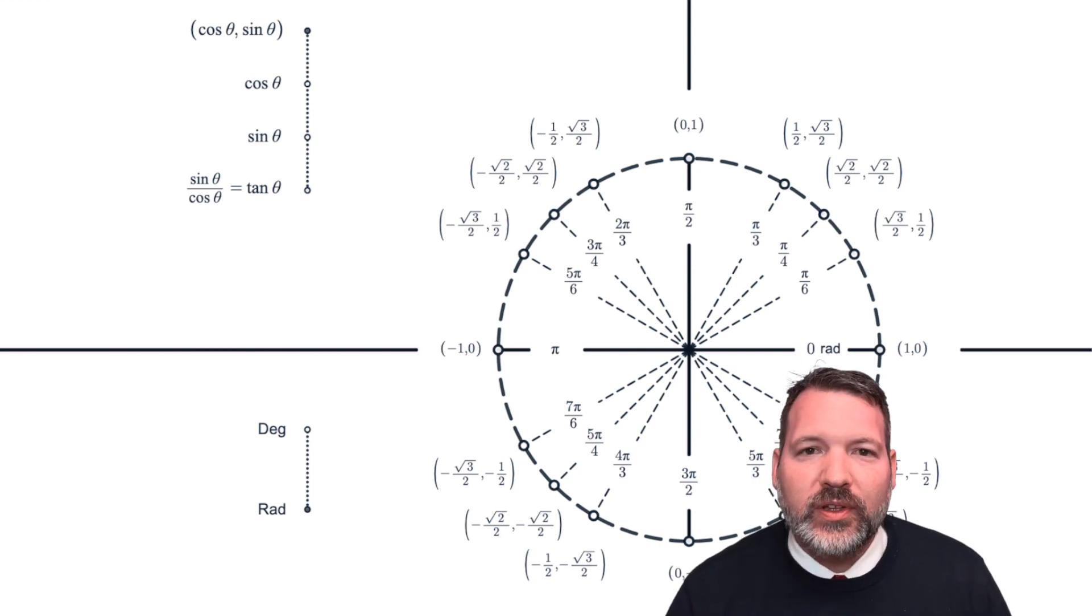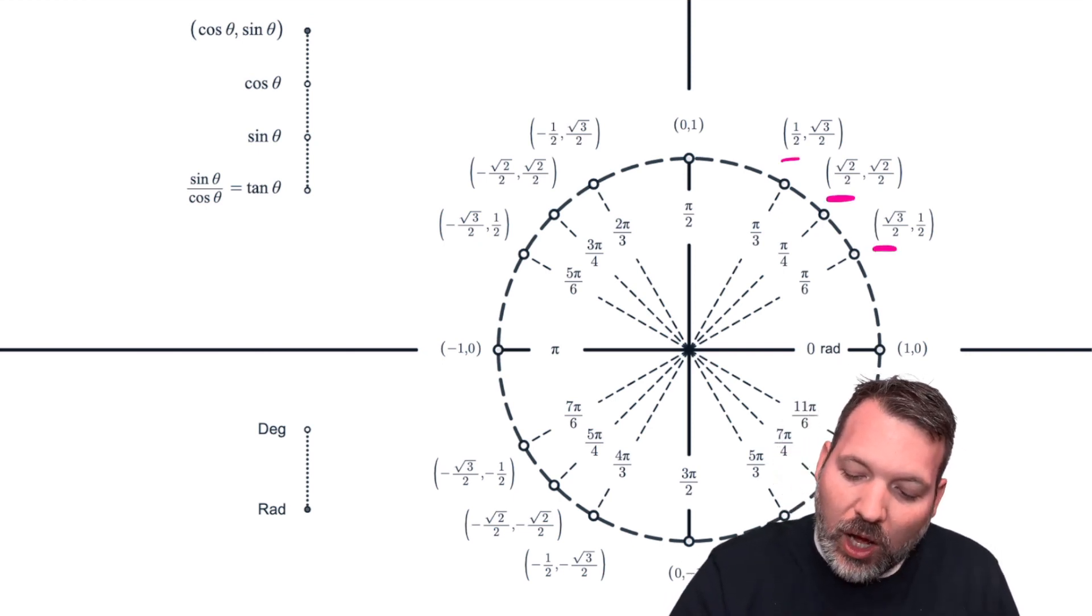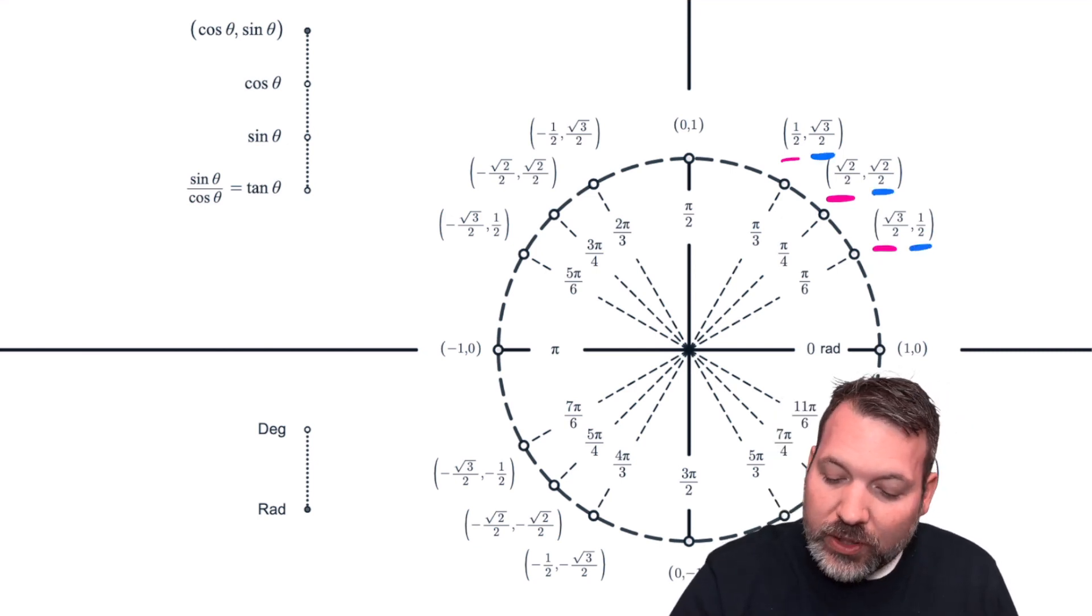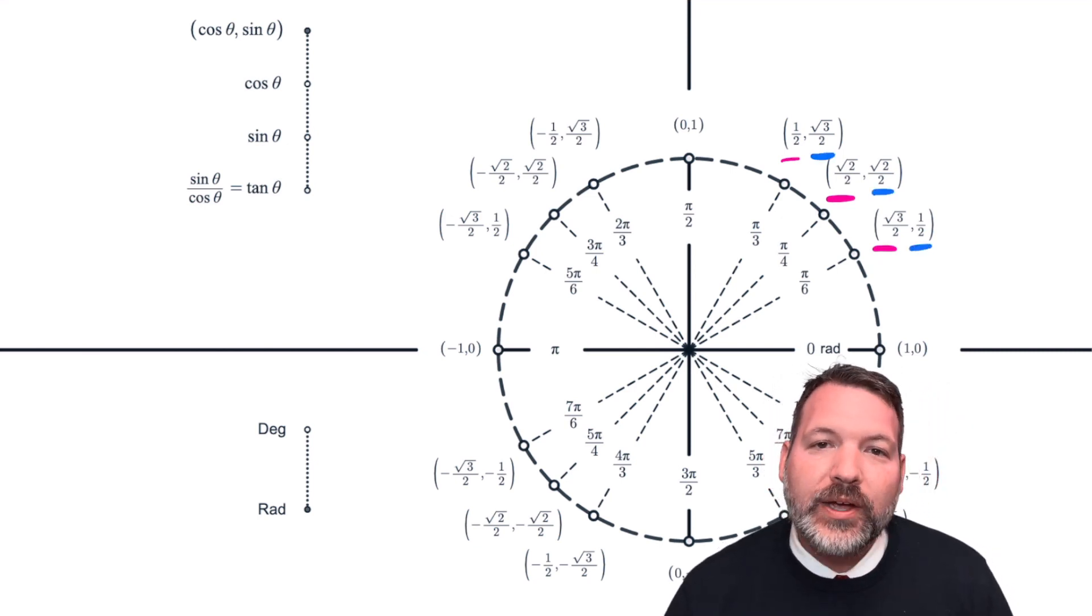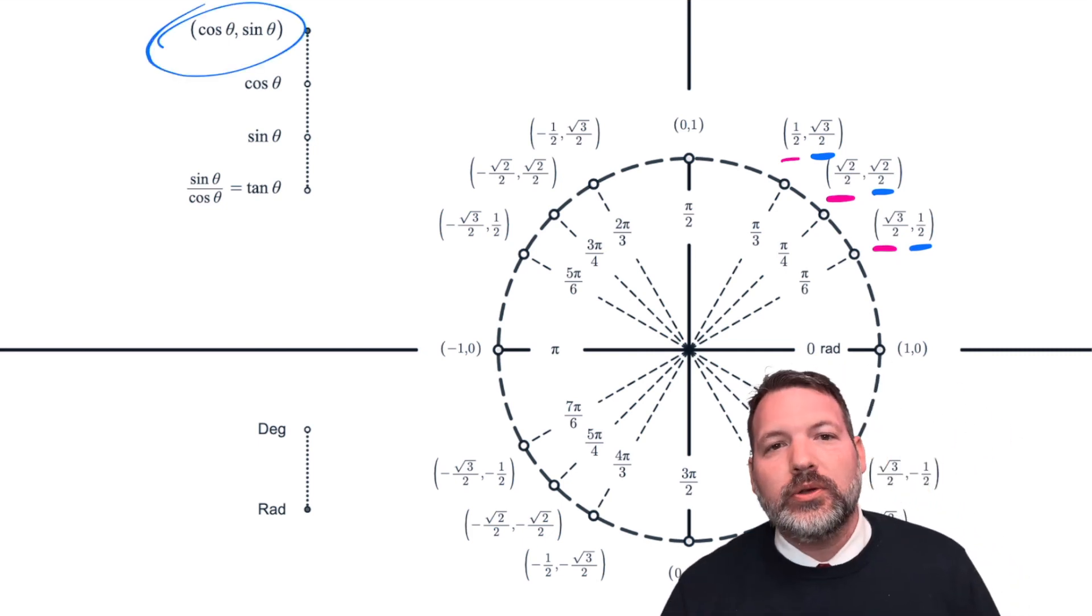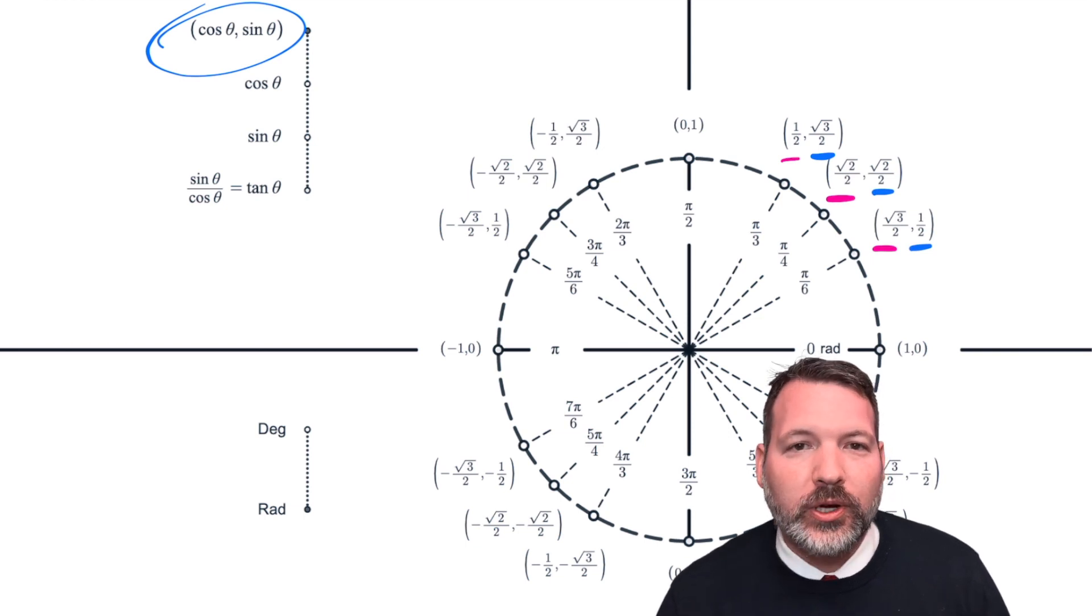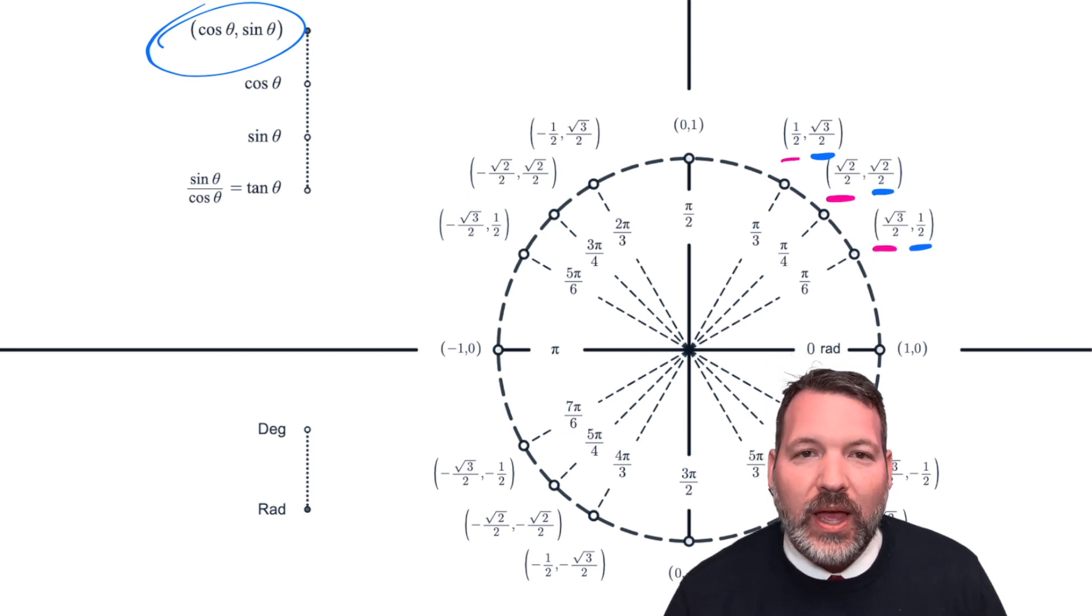The value of the cosine of an angle is just another way to talk about the x-coordinate along the edge of this unit circle. The value of the sine of an angle is really just a different way to talk about the y-coordinate along the edge of this circle. This is why sometimes when you're looking at a unit circle, you'll be looking at just a bunch of ordered pairs. Those ordered pairs represent a pair, cosine theta comma sine theta, that corresponds to the actual cosine and sine values for any given angle.